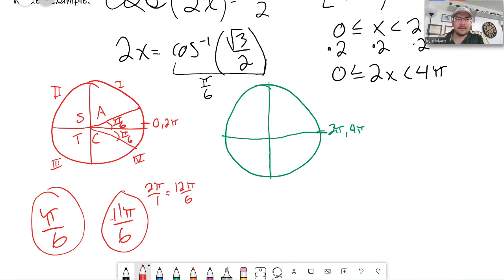If the way I got 11π over 6 was kind of confusing to you, another way you could do it is just to keep it in degrees until the very end. Just keep it in degrees.